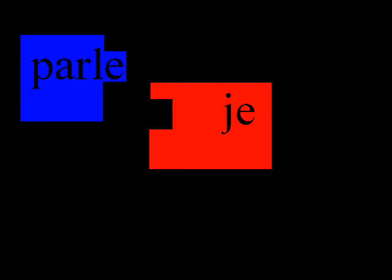You can also think of conjugating like connecting puzzle pieces. Let's look at these two puzzle pieces: je and parle. Je is in the rouge, or red, and parle is in the bleu, or blue. Look at the way parle is shaped — it looks like it can fit into the je puzzle piece. Let's see if it fits. Boop! It does. It fits perfectly.